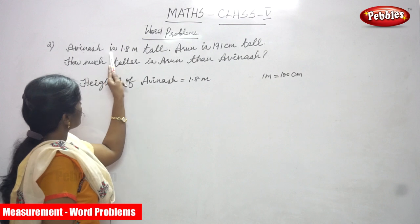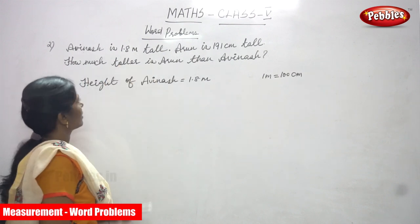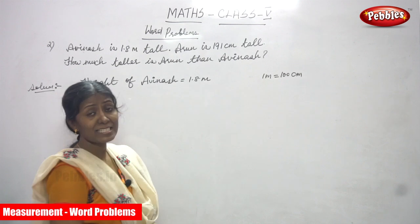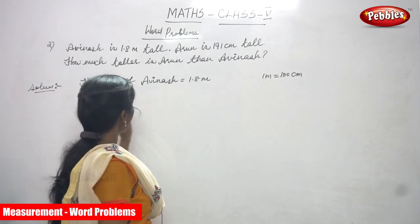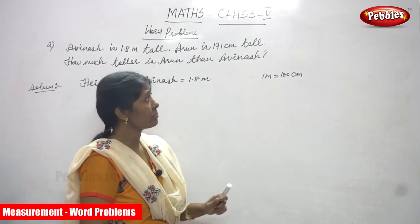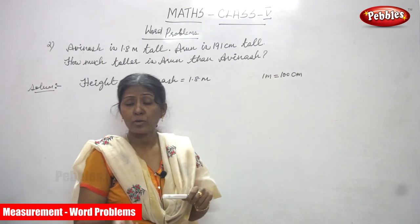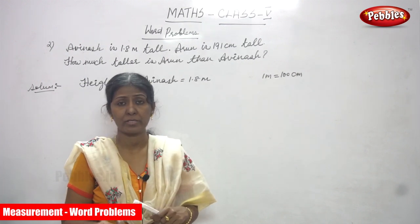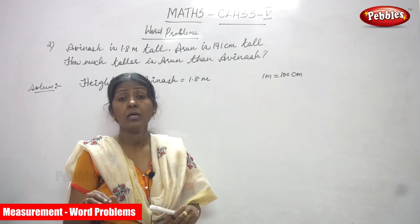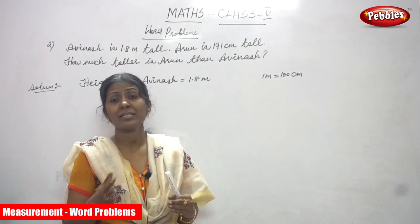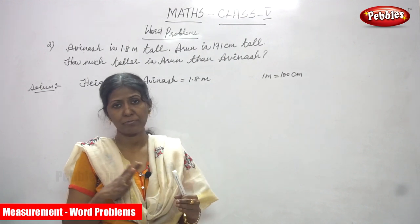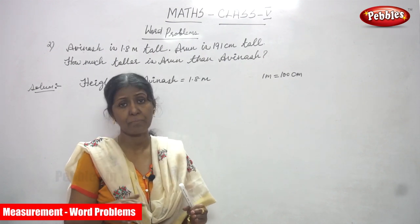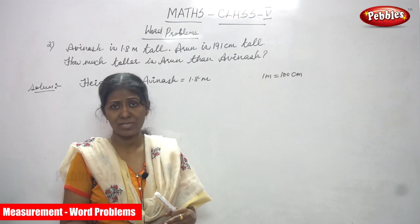Avinash is 1.8 meters tall — that is what I have written. Height of Avinash is 1.8 meters. But the height of Arun is 191 centimeters. So the unit is completely different. First you have to convert the units into the same unit. Convert all the units into the same, then only you can proceed with the sum.